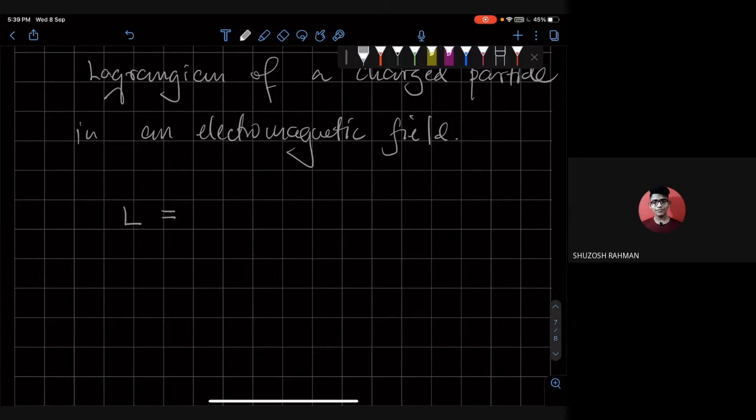It's going to be 1 half m x dot squared minus q phi plus q over c v dot a.